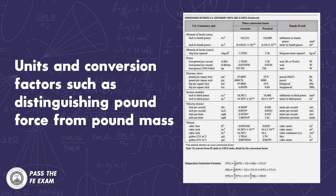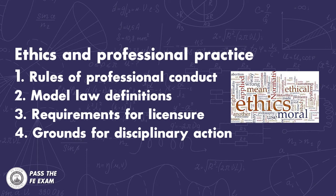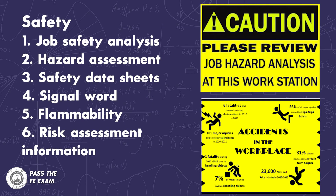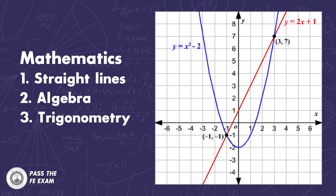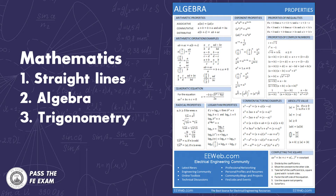So here's what the handbook contains. Number one, units and conversion factors, such as distinguishing pound force from pound mass. Number two, ethics and professional practice, covering topics such as rules of professional conduct, model law definitions, requirements for licensure, and grounds for disciplinary action — a very underrated component of being a licensed professional engineer. Number three, safety, such as job safety analysis, hazard assessment, safety data sheets, signal word flammability, and risk assessment information. Number four, mathematics, featuring everything from straight line and quadratic equations to algebra of complex numbers and trigonometry, and much more.